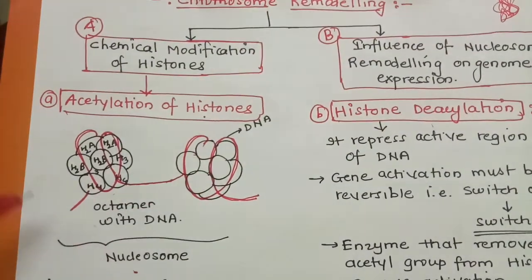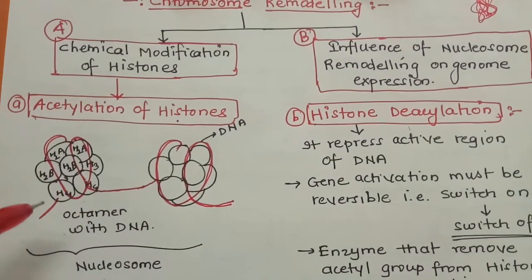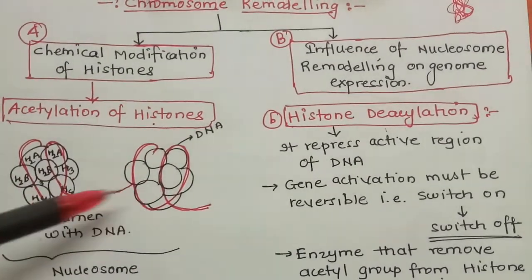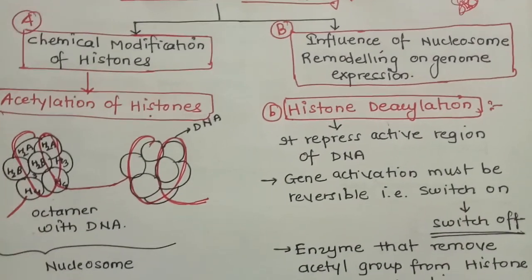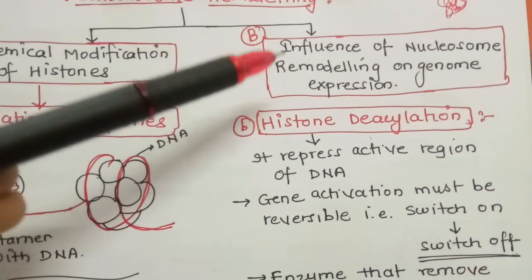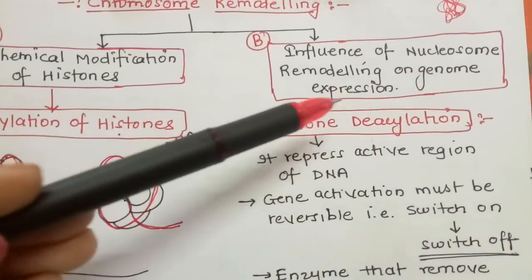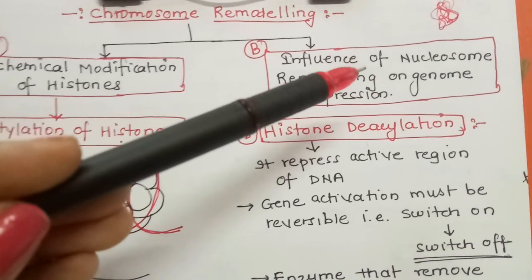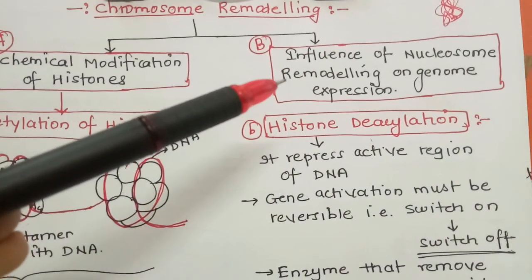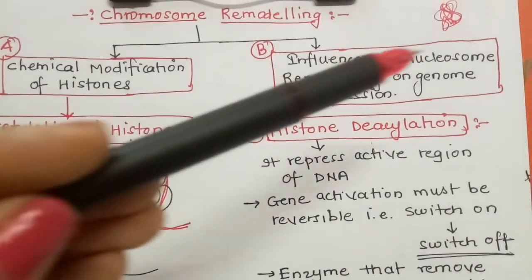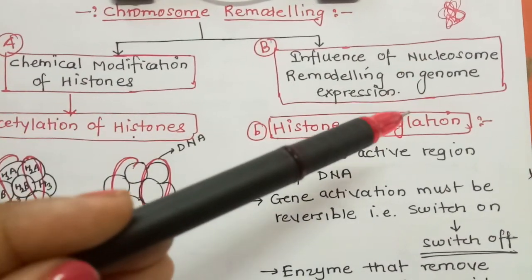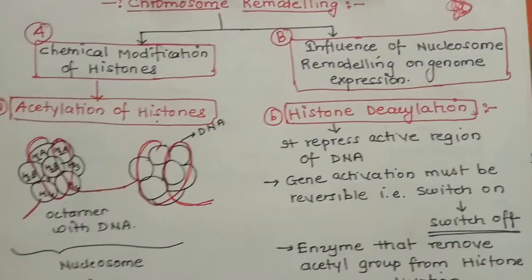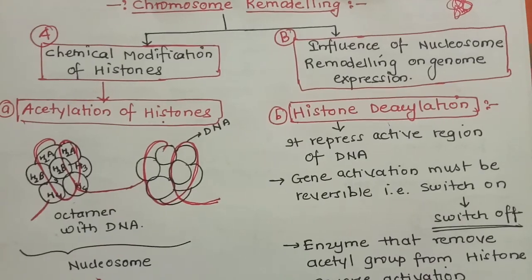Nucleosome refers to the complete arrangement of DNA wound around histones. If we can change or rearrange that structure - move it forward, backward, up or down - that is called remodeling. The influence of nucleosome remodeling on genome expression is the second part. Nucleosome remodeling - what is its effect on genome expression? That is the next topic.